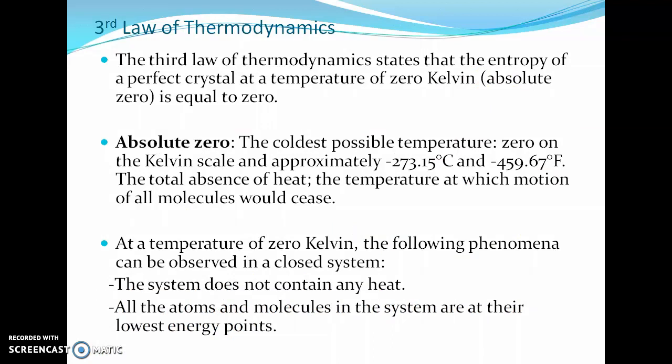The Third Law of Thermodynamics states that the entropy of a perfect crystal at a temperature of 0 Kelvin — that is, absolute zero temperature — is equal to zero. Absolute zero is the coldest possible temperature, approximately minus 273°C or minus 459°F, where there is a total absence of heat and the motion of all molecules ceases.